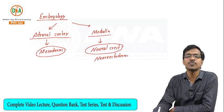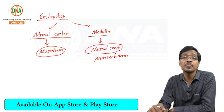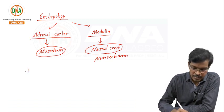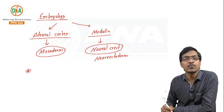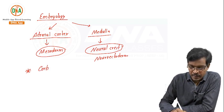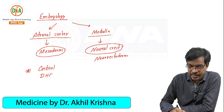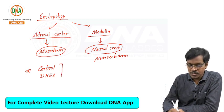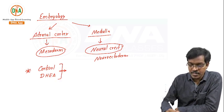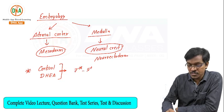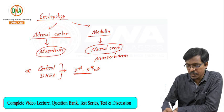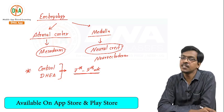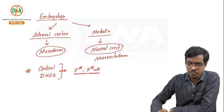That was the first question for MCQs from this area. The second question: at what period of gestation does the adrenal gland start to produce steroids? In embryonic life, the adrenal cortex starts to produce steroids — mainly cortisol and the sex steroid precursor DHEA (dehydroepiandrosterone). These two are produced from the adrenal gland at around the seventh to ninth week of gestation. Remember these two points from embryology.